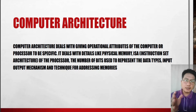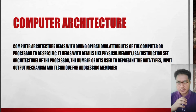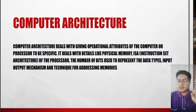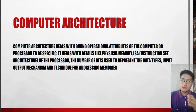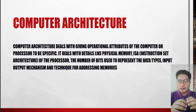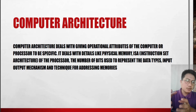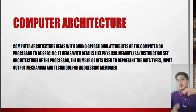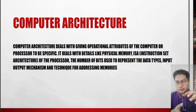In computer architecture, to differentiate it from computer organization — computer architecture deals with keeping the operational attributes of the computer, or the processor to be specific. It deals with details like physical memory, the ISA or the instruction set architecture of the processor, the number of bits used to represent the data types, input, output mechanism, and technique of addressing memories. To sum it up, computer organization is more on the physical aspects of the computer system, but computer architecture is more likely on the planning of the software application.